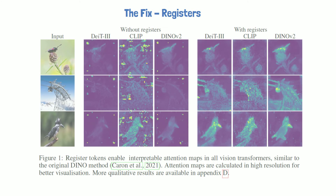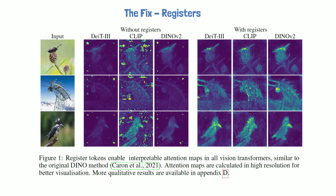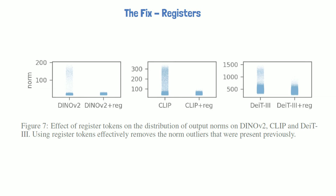Running models with the additional register tokens really prevents artifacts from appearing, as we can see in figures showing attention maps without and with registers. With registers, the attention maps have much less artifacts and appear more semantic and related to the original image. This can also be seen in charts showing the distribution of norms without and with registers — the registers effectively remove the outliers. This works not just for DINOv2, but also for OpenCLIP and DIT.